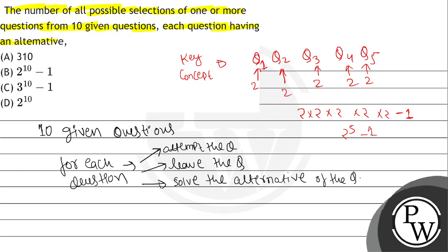So for each question we have three possibilities, giving a total of 3 to the power 10. But since the question asks for selection of one or more questions, the student must attempt at least one question. We exclude the one case where the student left all 10 questions, so we subtract 1. The answer is 3 to the power 10 minus 1, which is option C. This question is in the Easy category.